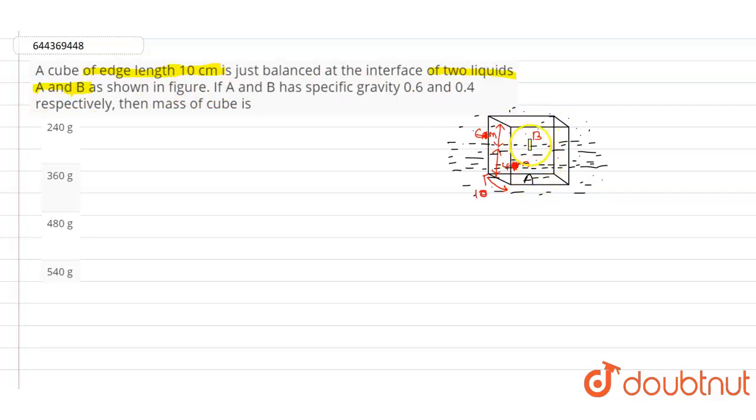If A and B have specific gravity of 0.6 and 0.4 respectively, then we need to find out the mass of the cube.